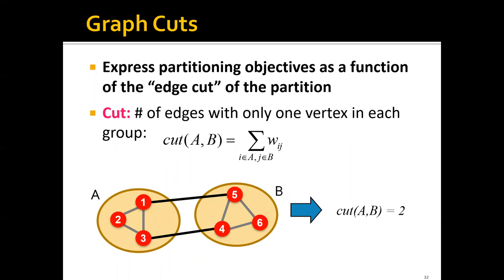One idea to define the goodness of a partitioning is to express the partition objectives as a function of the edge cut of the partition, where we define the cut as the number of edges with only one vertex in each group.